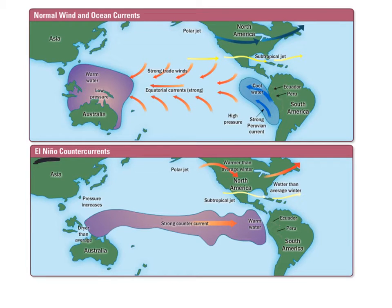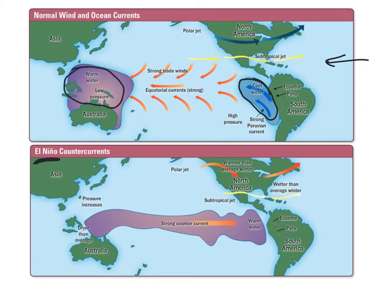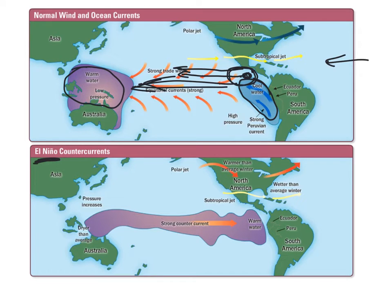El Niño is a really interesting event — we appreciate it in the southwest because that's when we expect a lot of precipitation in winter. The normal condition, similar to La Niña, involves a warm water low pressure system over southeast Asia causing strong Peruvian currents and strong equatorial winds. Storms form and because of the big pressure difference we get a lot of hurricanes moving in that direction, with moisture moving out that way.